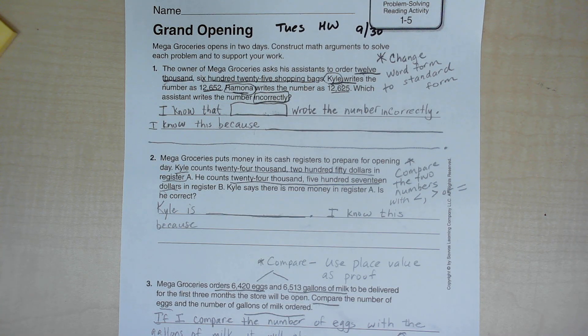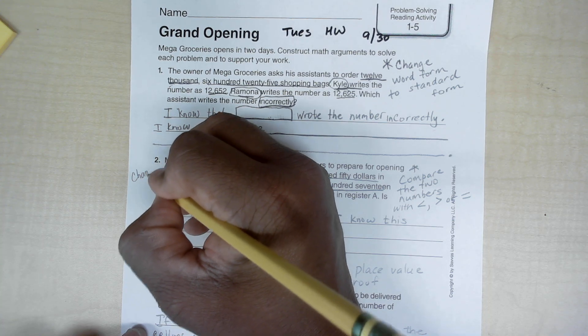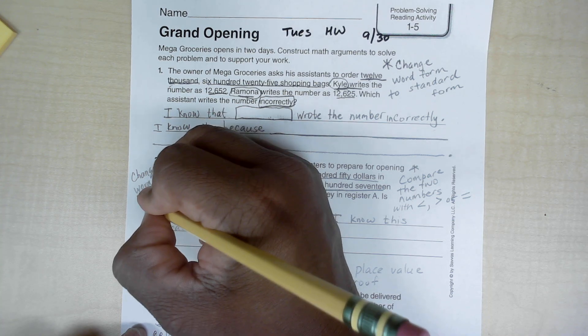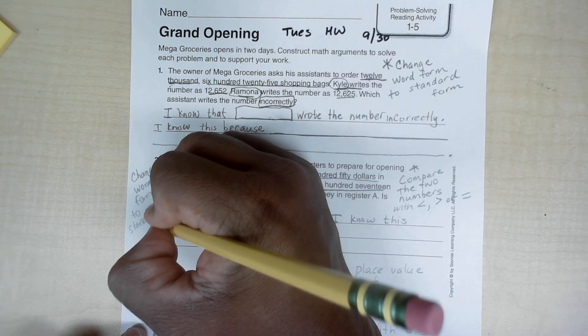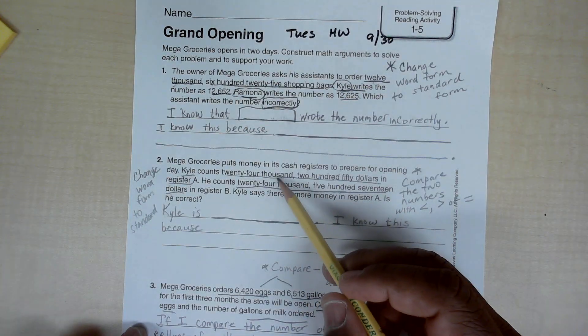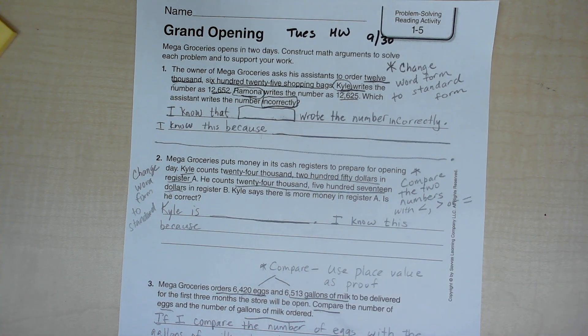Is he correct? You're comparing the two numbers. He's saying there's more money in A than B. I would change word form to standard, change these numbers into number form so you can see it, and then you'll know if he's right.